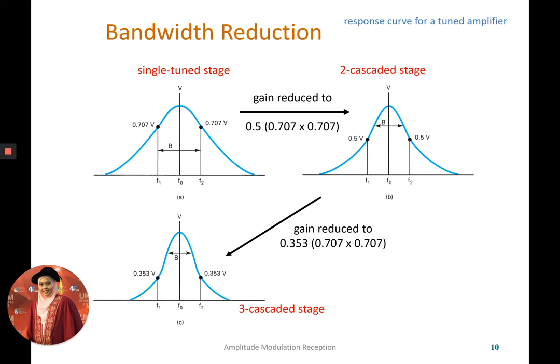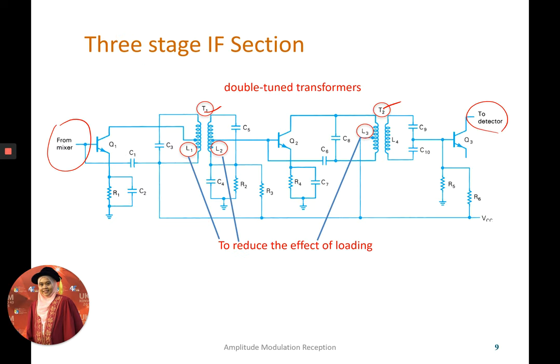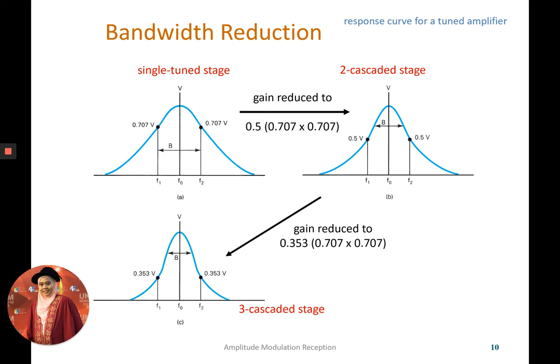And after next to the detector. In the, from this double tuned transformer, basically it will try to reduce the bandwidth. So if you put only one single transformer, basically you will get this kind of response curve, 0.707.